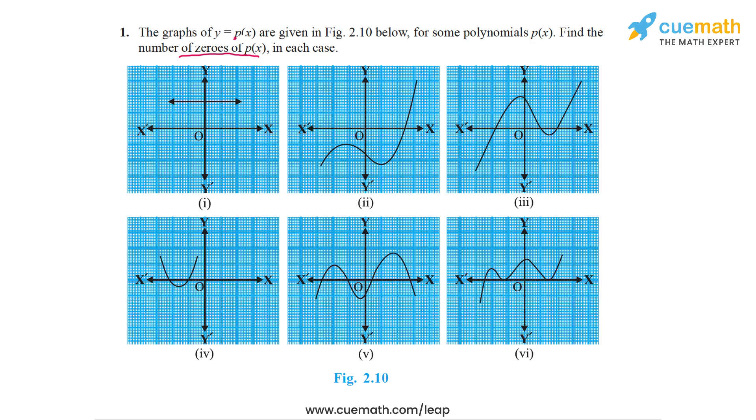So look at the first graph. In this graph, we have the graph is a straight line. So it's a constant polynomial. It will never take the value 0. It will never intersect the x-axis. So this polynomial has no zero. In other words, it has 0 zeros.